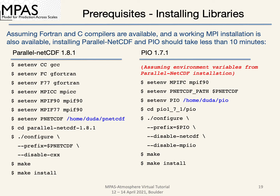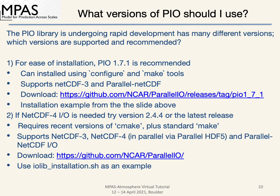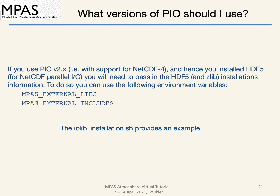For installations without netcdf4 input and output, the following is an example of installing parallel netcdf and PIO. Once both libraries have been installed, be sure to set the pnetcdf and PIO environment variables to their installation directories. There are many different versions and releases of PIO; some work better with MPAS than others. For ease of installation, use PIO version 1.7.1, which allows you to use the configure and make tools to install. If you do need netcdf4 input and output support, try PIO version 2.4.4 or another latest release. See the iolib installation script as an example.